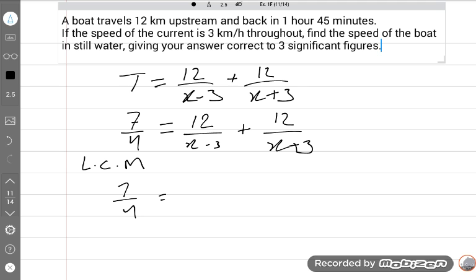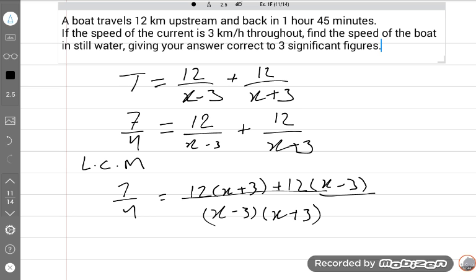7 upon 4 is equal to 12 into x plus 3 plus 12 into x minus 3, all upon x minus 3 times x plus 3. We will solve further on the next page.